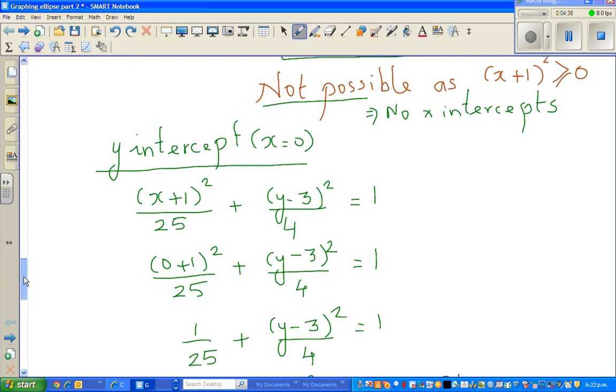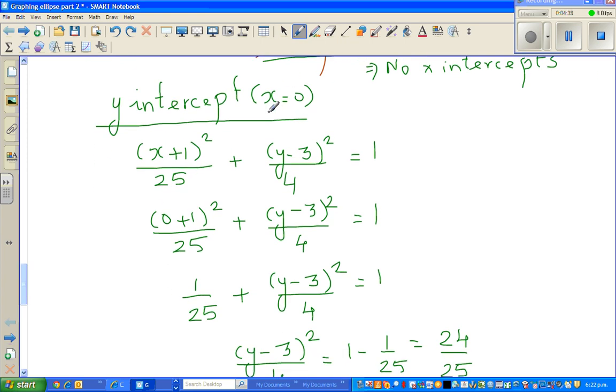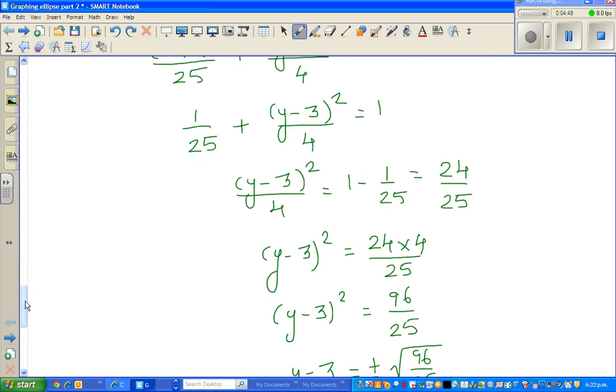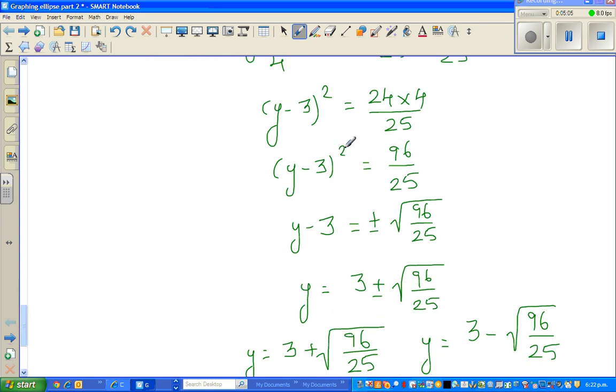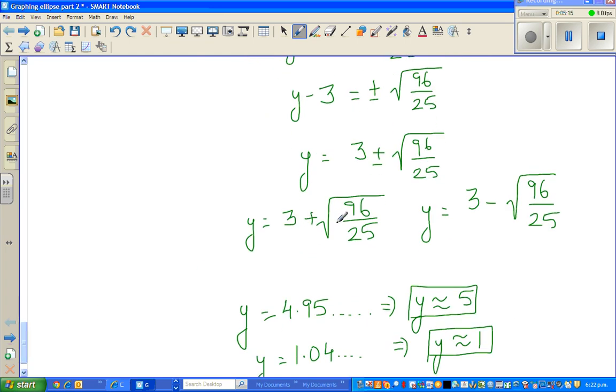Now, to get the y-intercept, the same logic, I've set x is equal to 0. So, the same process, we set x is equal to 0, 1.25 plus this is equal to 1, and this is simple manipulation, 1 minus 1.25 is negative 0.25, and then I have multiplied both sides by 4, so you've got y minus 3 squared is 96 over 25. And if you remove the square, you have to find the square root, so you have to have plus or minus square root of 96 over 25, and I'll show this on a calculator.